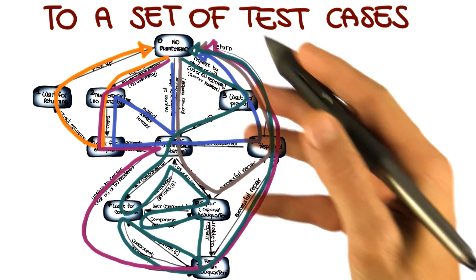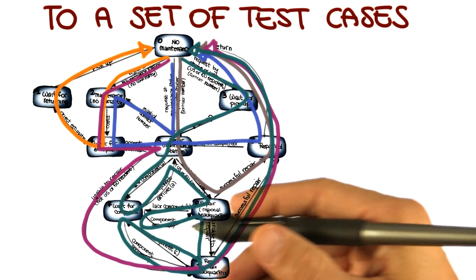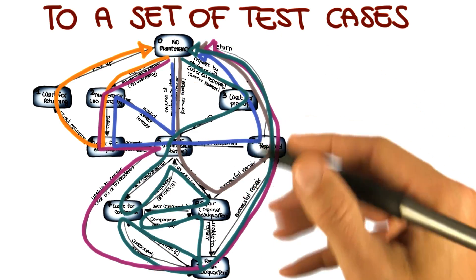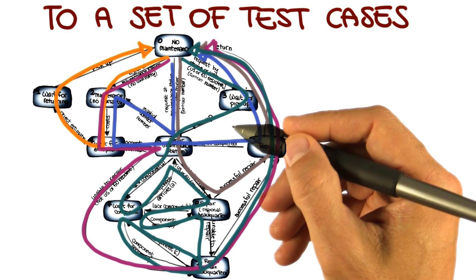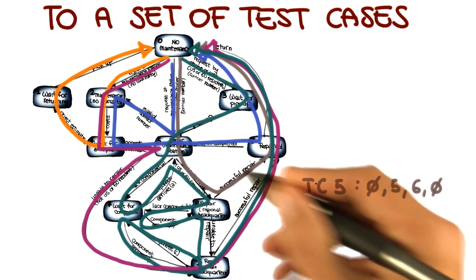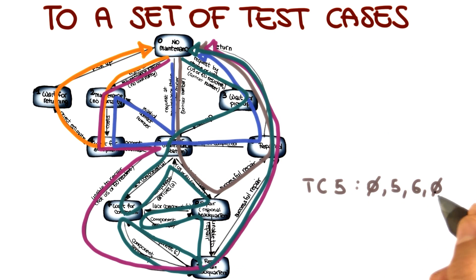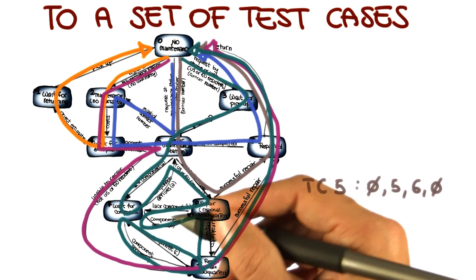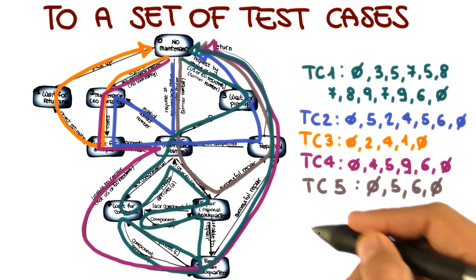And once I have these test cases, I can express them in a clearer way by simply specifying what are the states that they cover. I'm just going to give you a couple of examples. So if we look at the last one that I added, which would be test case number five, I just need to specify that it will go through state zero, which is this one, five, which is this one, six, and then back to zero. And I can do the same for the other test cases. So this will be my complete set of test cases.